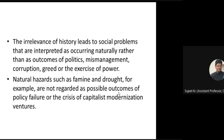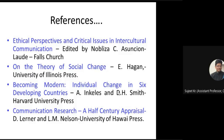We always thought social problems are natural problems — people have no knowledge, that's why problems persist — but never thought these problems may be the result of wrong politics, mismanagement, corruption, and exercise of power. Corruption has harmed our country more than people's lack of knowledge. Natural hazards such as famine and drought are not regarded as possible outcomes of policy failure or the crisis of capitalistic modernization ventures. For example, during the Bengal Famine, the British kept exporting grains to foreign countries and never focused on assisting famine-affected people — because they never thought the problem was the result of their own wrong policies.